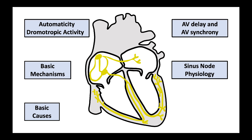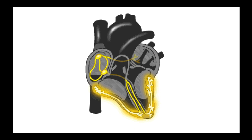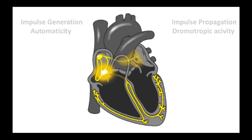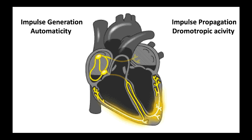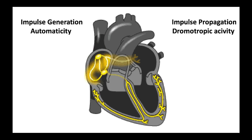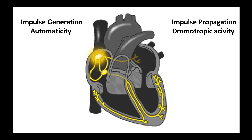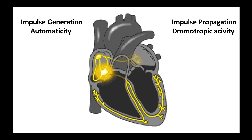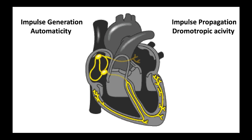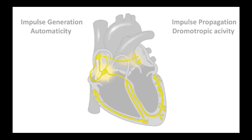We will also review sinus node physiology and overdrive suppression. The cardiac electrical activity is governed by two properties: impulse generation, or automaticity, and impulse propagation, or dromotropic activity. Automaticity is the property by which electrical impulses are generated. Dromotropic activity is the property by which depolarization waves or impulses generated by the automatic cells are propagated to the myocardial cells to cause them to contract. Cardiac electrophysiological properties are the results of presence of functionally specialized cells that act as impulse generators and conductors.